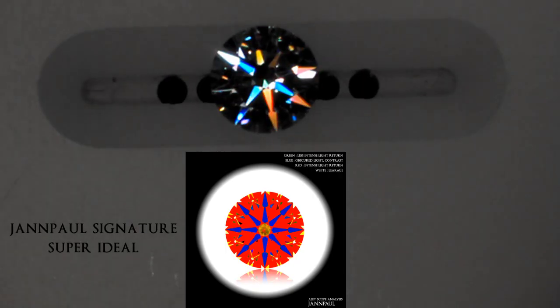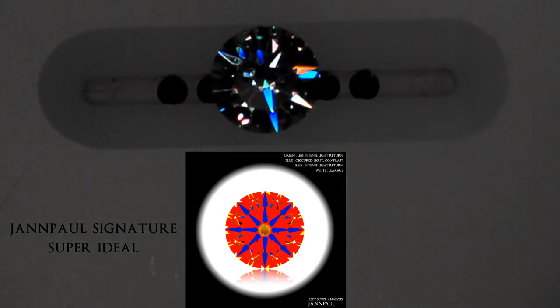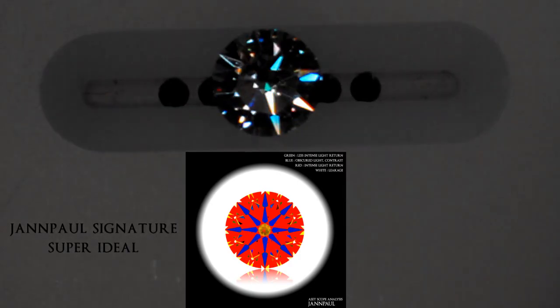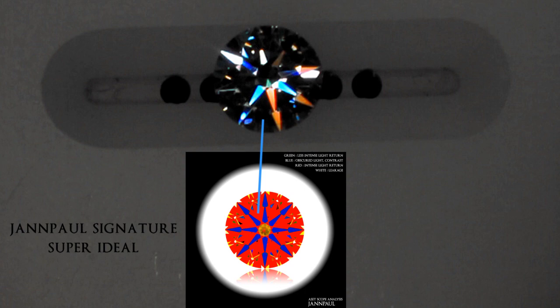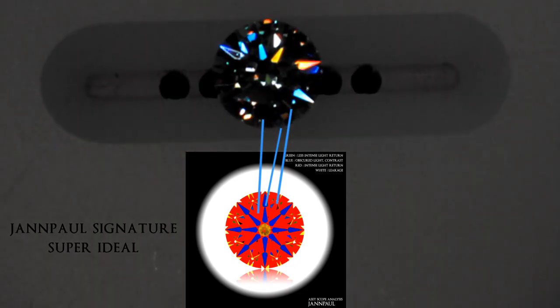Following this next section, we will look at Jan Paul's signature round diamonds and the individual diamonds' ASAT scope analysis. The first is Jan Paul's signature Super Ideal. Looking at the ASAT scope, the red parts signify light return which give the diamond sparkle. The blue parts, or arrows, are reflectors of light and at certain angles give bold flashes. The green parts of the diamond from the ASAT scope at lower angles of light give small amounts of dispersion, contributing to the diamond's scintillation.